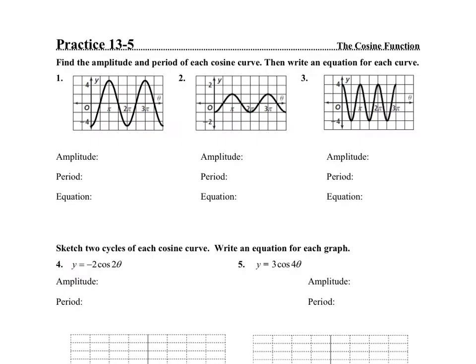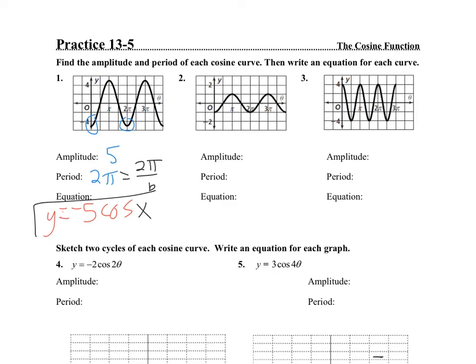Find the amplitude and period of each cosine curve and write an equation. The amplitude of this one is 5, and the period is 2π. This is a negative cosine function because you're starting down — cosine usually starts up, so this is the opposite. So y equals negative 5 cosine. The period equals 2π over B, so B has to be 1, giving us negative 5 cosine x.